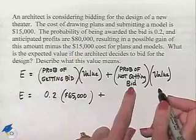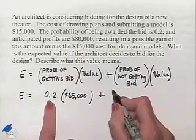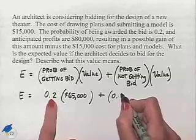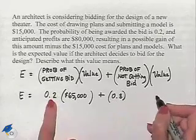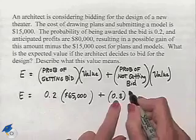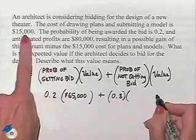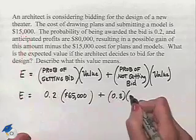The probability of not getting the bid is going to be one minus the probability of getting the bid. That is, we had two-tenths for getting the bid, so we'll have eight-tenths probability of not getting the bid times the value associated with not getting the bid. That would be considered a loss of the cost for us of $15,000.